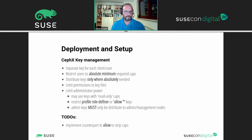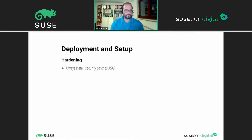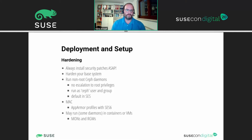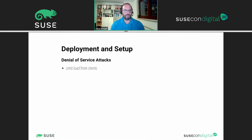There are some to-dos the community is currently thinking about: implementing something that not only allows capabilities but strips them. Regarding hardening: always install the latest patches, harden your base system, and never run Ceph as root — because you could escalate. By default in SES there's a Ceph user in the Ceph group for that. You should probably enable mandatory access control like AppArmor, which is part of SES 6. You may also consider running some services as a container or VM — SES 7 will containerize all services by default. For denial-of-service countermeasures, you can limit the load from clients; RBD has a QoS throttling feature, and CephFS has quotas for that.